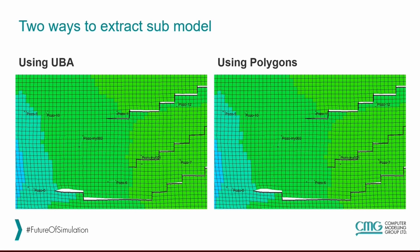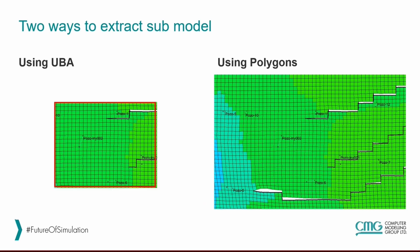There are two ways to extract submodels. The first one is using the IJK addresses of the grid blocks — that means the I, J, and K addresses of each grid block. You select the area you want to extract the submodel from using the I, J, and K addresses of these grid blocks, and the result will be a rectangular-shaped submodel.